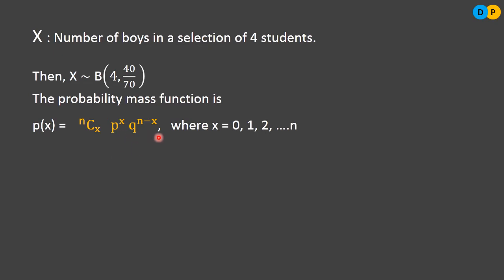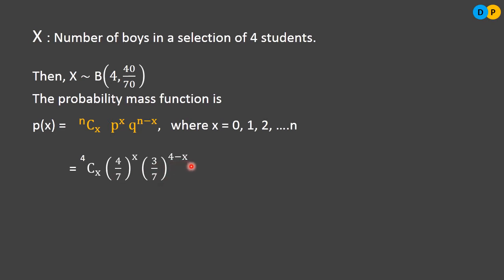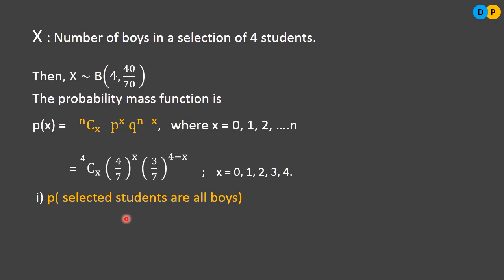The probability mass function general rule is P(X = x) = nCx × p^x × q^(n−x), where x ranges from 0 to n. For our problem, n = 4, so P(X = x) = 4Cx × (4/7)^x × (3/7)^(4−x), where x = 0, 1, 2, 3, 4.